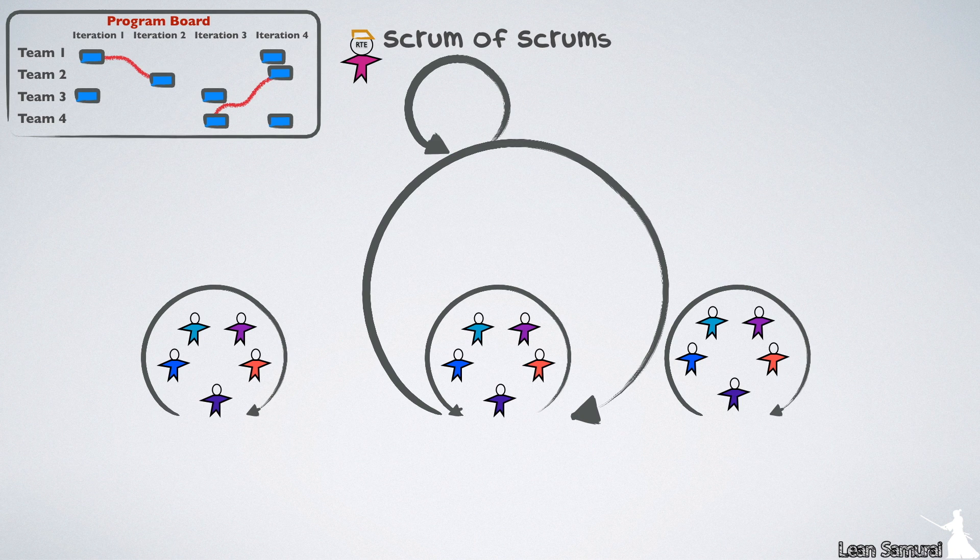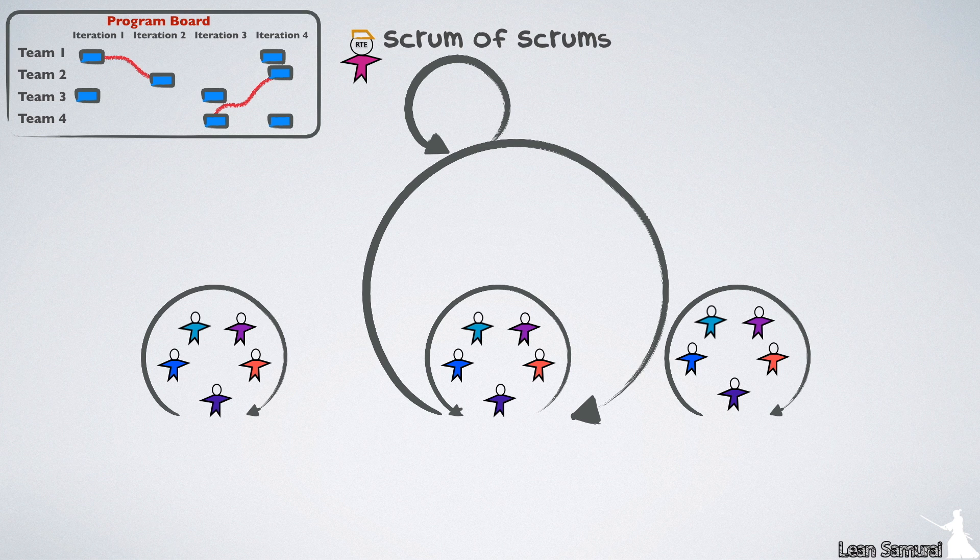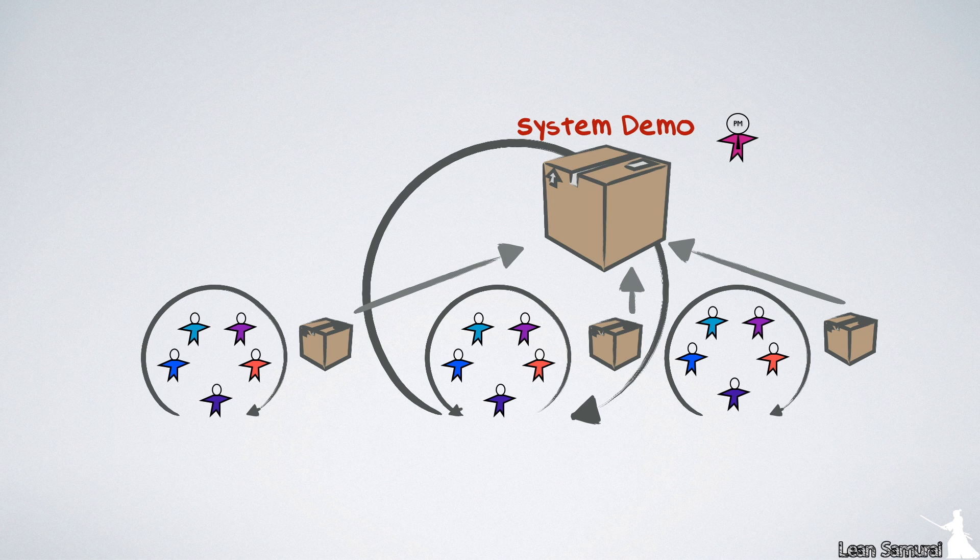To make sure the train will meet its objectives, we have both a bi-weekly meeting of the Scrum Masters and the Release Train Engineer, and a system demo at the end of every iteration. This is a demo of the integrated system, which ensures that we don't have one team running ahead, but that the whole train is iterating together.